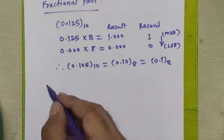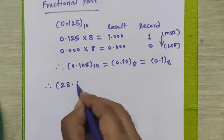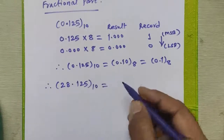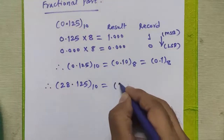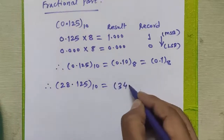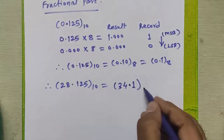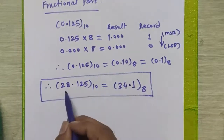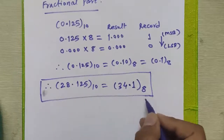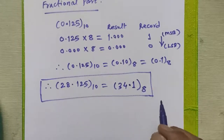To obtain our result for 28.125 decimal to octal, we need to combine both parts. The integral part result was 34 and the fractional part result is 0.1. Therefore, 28.125 decimal is equivalent to 34.1 in octal. Thank you.